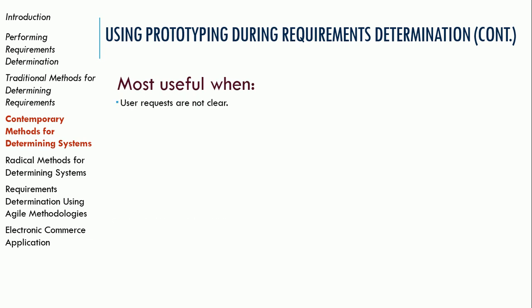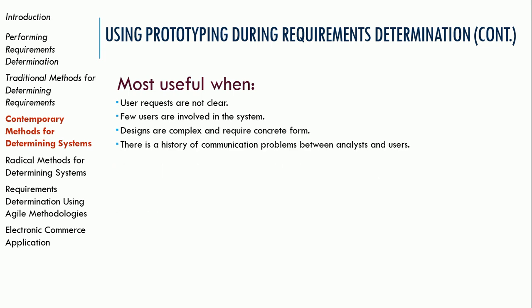Prototyping is most useful when user requests are not clear, when there are very few users involved, or when it's a very small niche system. Evolutionary prototyping is useful in those cases. It's also helpful when requirements or designs are complex and it helps to see the prototype to understand how things work in the real world, or when there's a history of communication problems — where users say 'that's not what I asked for' — giving them a chance to see it before you sink a lot of time into the project. It also helps if the tools are readily available to build the prototype.